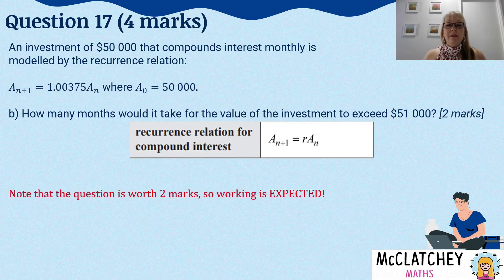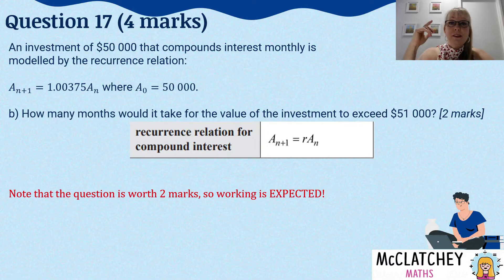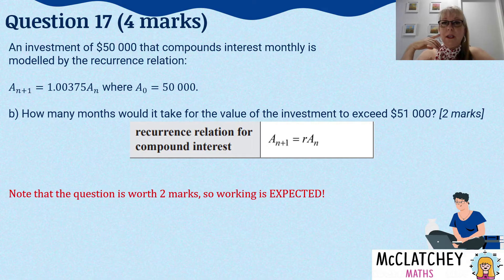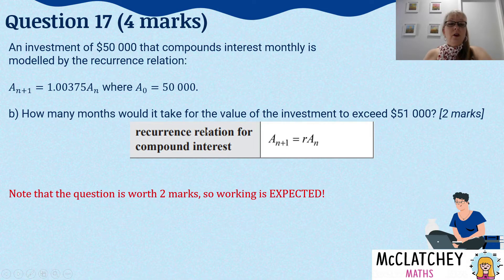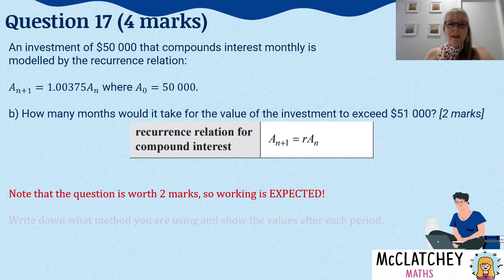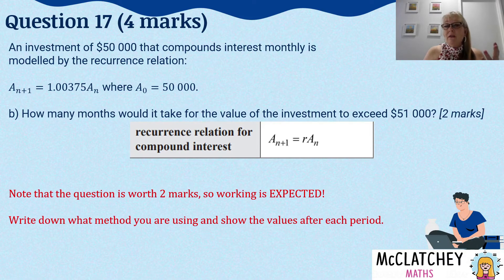This question is worth two marks. It's very easy to just plug this into your calculator and press the equals button using the iterative function, get the answer — but it's worth two marks, so they are looking to see some working. Knowing that $50,000 is your starting point and $51,000 is your endpoint, it won't take very long, so you'll want to show every value. Write down what method you're using — the iterative function on your calculator — and show the values after every monthly period.